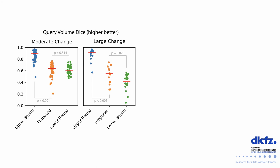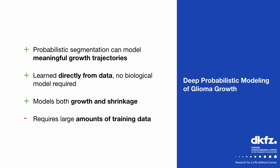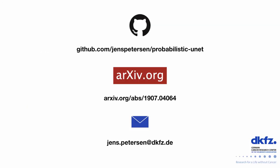Because we can only really evaluate our approach on cases exhibiting considerable change, we define two groups: the large change group (the top 10% of cases with the largest change) and the moderate change group (above-average change cases not in the first group). For query volume Dice, our model isn't much better than the lower bound for moderate change, but for large change we see a significant difference. For the surprise metric, our model is on par with the upper bound for moderate change and still much better than the lower bound for large change. This essentially means probabilistic segmentation can indeed be used to model meaningful growth trajectories.